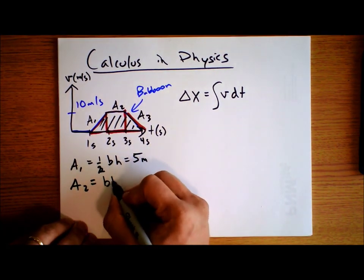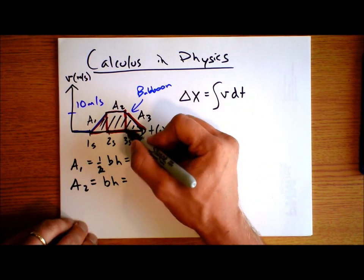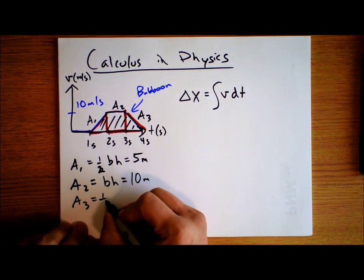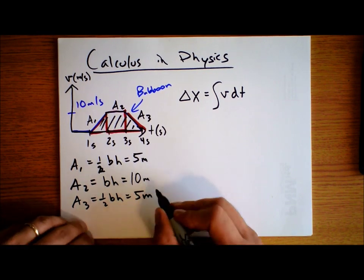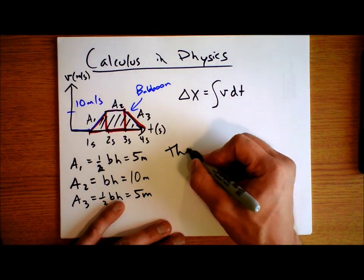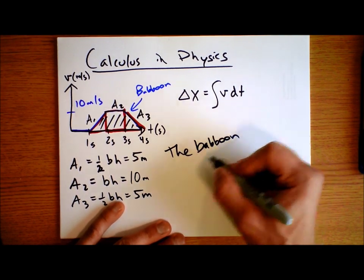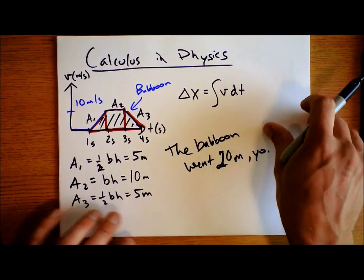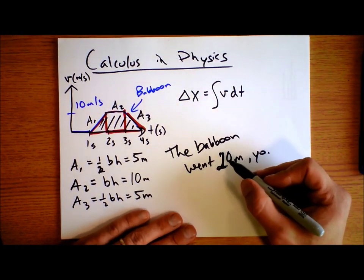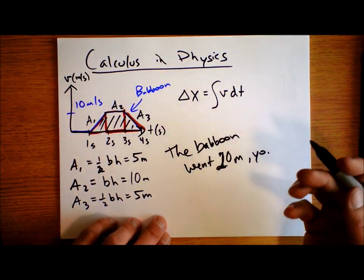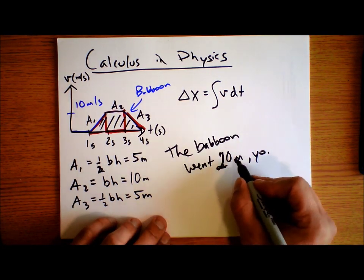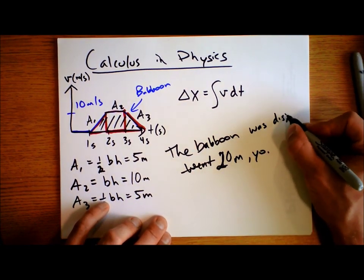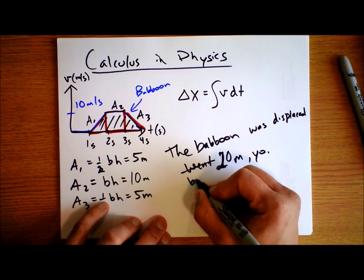Area 2 is base times height: 1 second times 10 meters per second equals 10 meters. And area 3, corresponding to area 1, is also one-half base times height — also 5 meters. So the baboon was displaced by 5 plus 10 plus 5 equals 20 meters. That's an easy problem. But we don't know where the baboon is; that's the initial condition we don't know. All we know is that it was displaced by 20 meters.